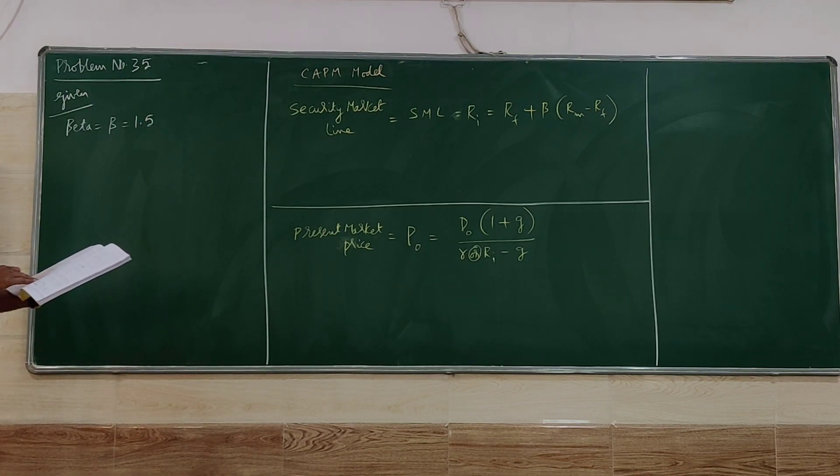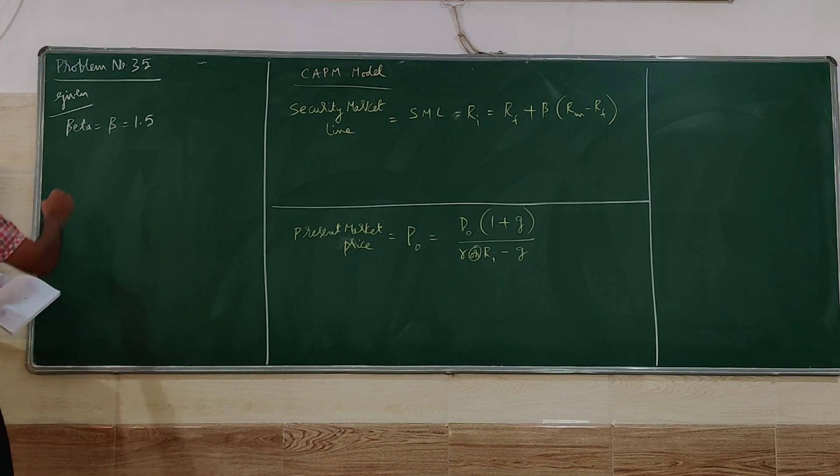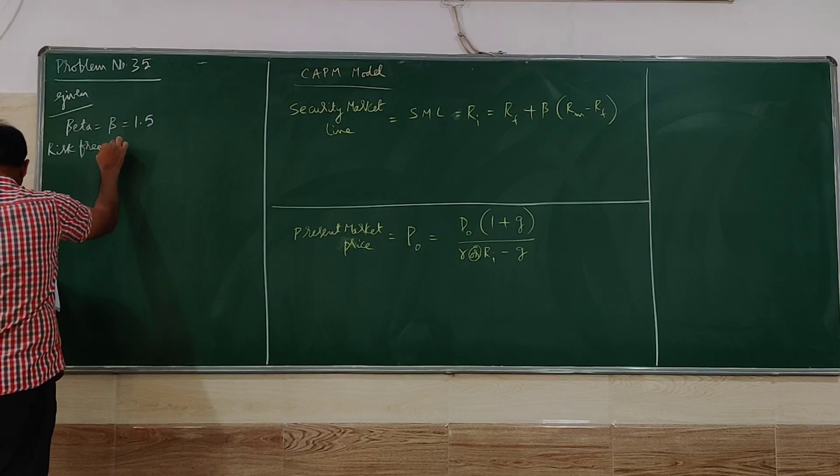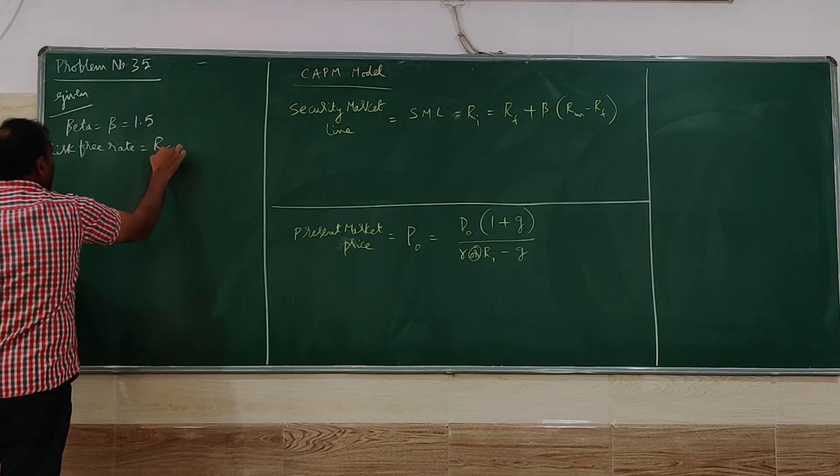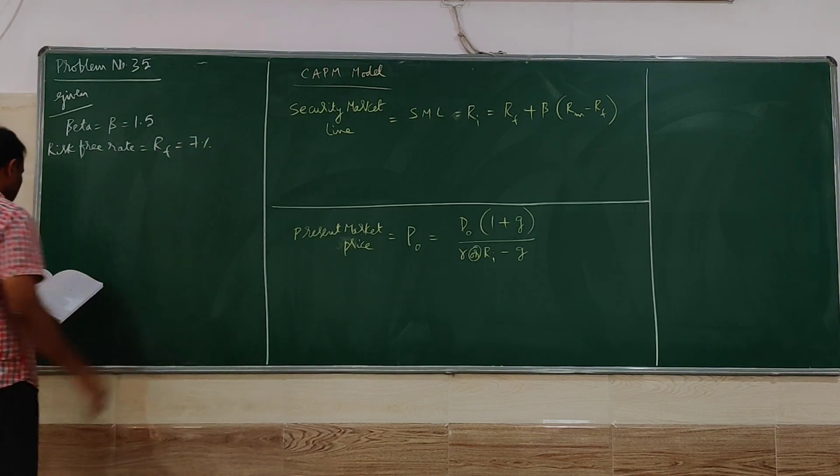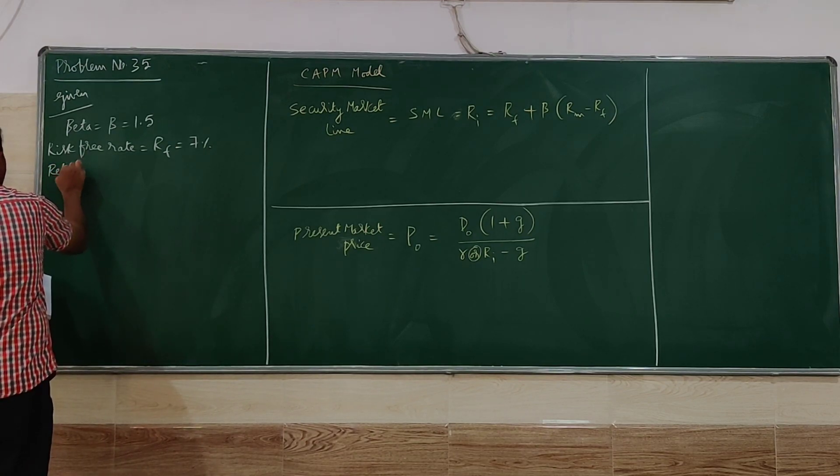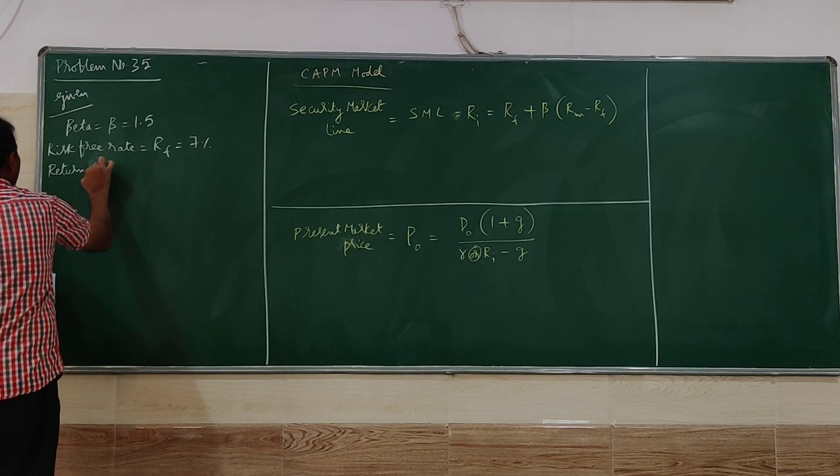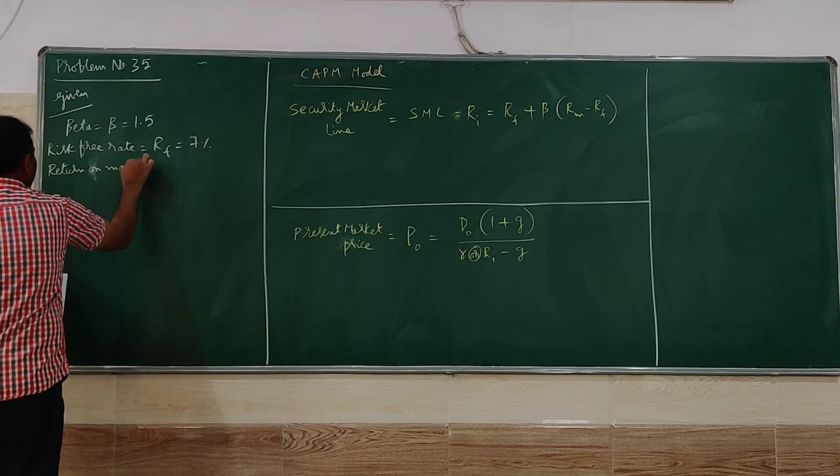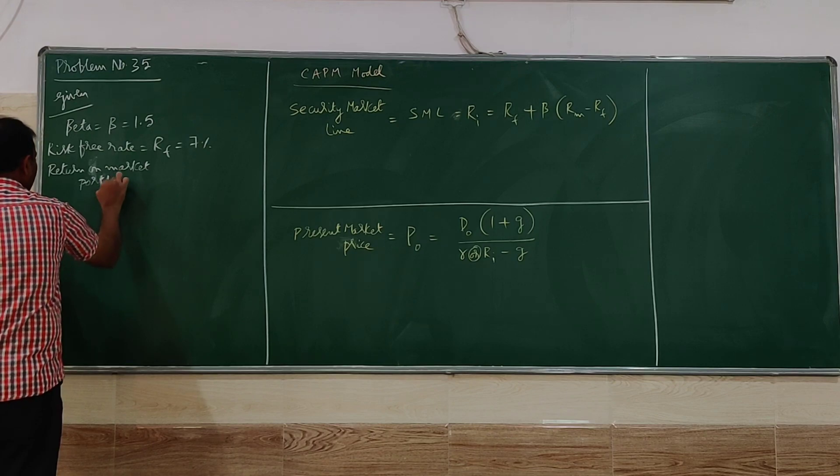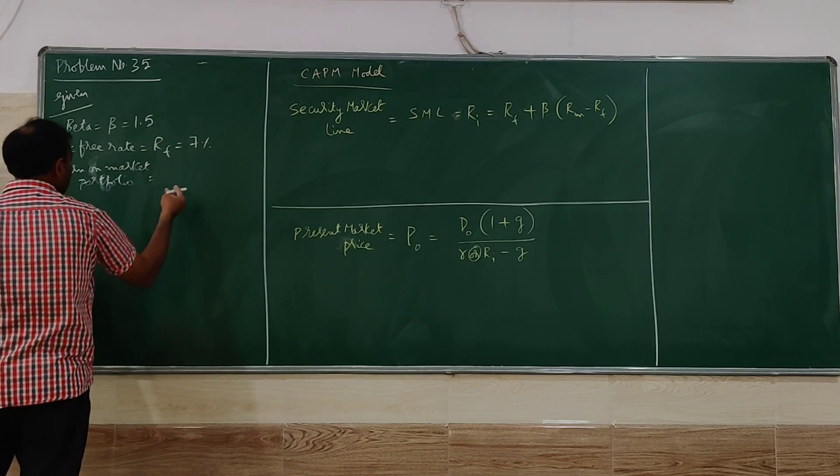Next the risk-free rate is 7%. It is called as RF, 7%. And the expected rate of return on the market portfolio is 14%. We name it as RM, 14%.